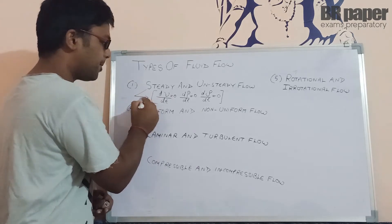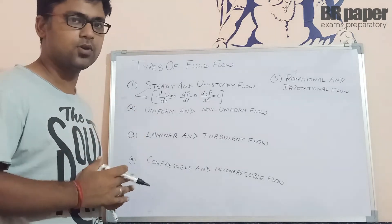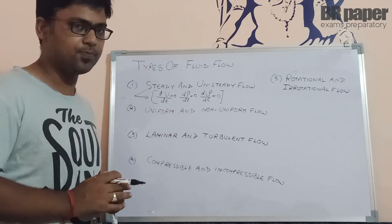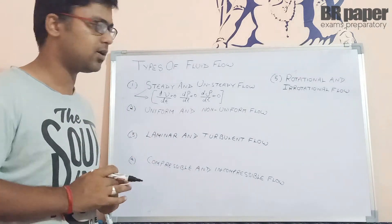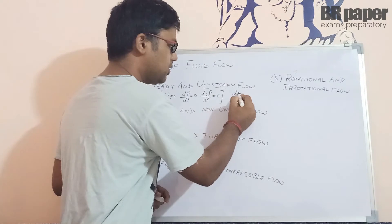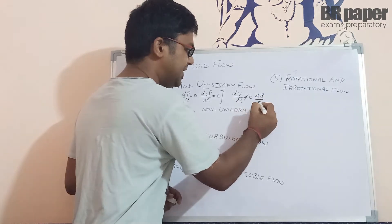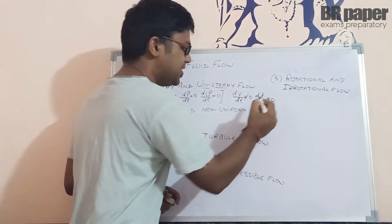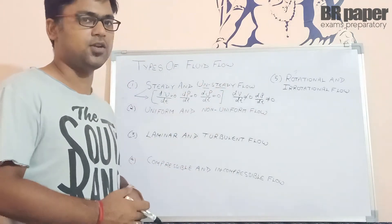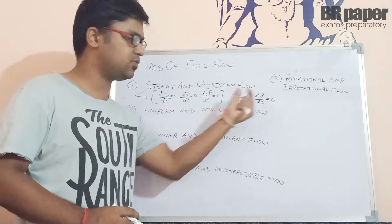In steady flow, the fluid characteristics are not changing with respect to time. Velocity is a function of space only — it does not vary with respect to time. For unsteady flow, if dv/dt ≠ 0 or dρ/dt ≠ 0, it means these properties are changing with respect to time — then it is known as unsteady flow. So for steady flow this condition (derivatives = 0) must be satisfied, and for unsteady flow the derivatives must be non-zero.